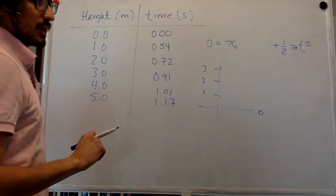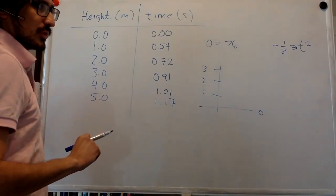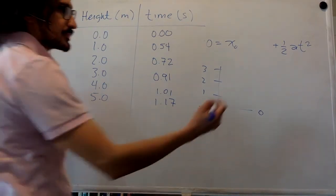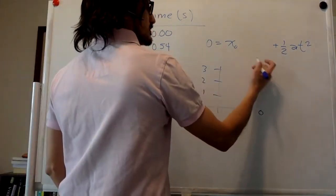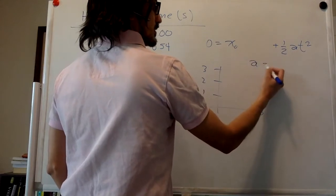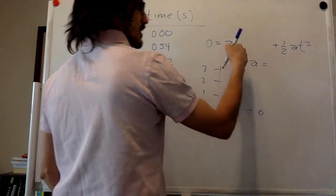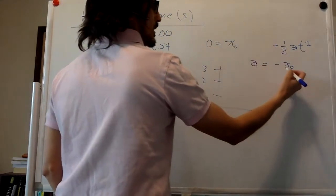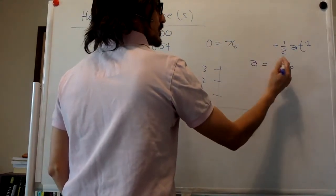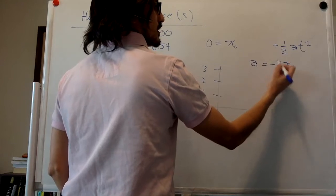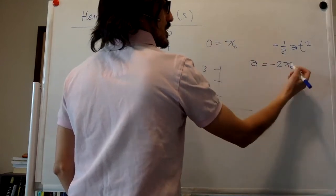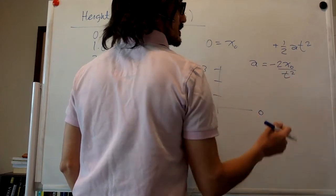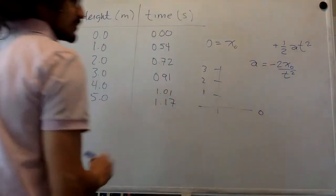So if you wanted to do this as fit it to a straight line, the acceleration is, this one we're going to move it over here. Multiply times two, this one, and then divide by t squared.